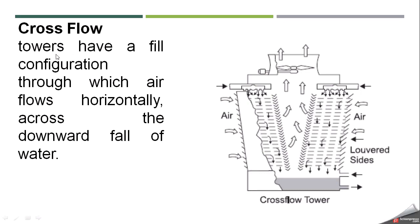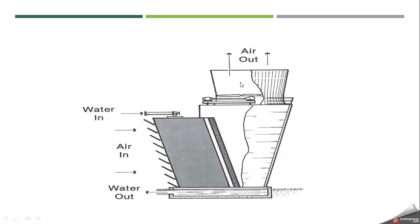The second type is cross flow. As obvious from its name, cross flow towers have a fill configuration through which air flows horizontally across the downward fall of water. Air enters from one or both sides, passes through the fill, while water falls from the top perpendicular to the air. After intermixing and cooling, the air moves upward. Since water is perpendicular to the air, it is called cross flow.